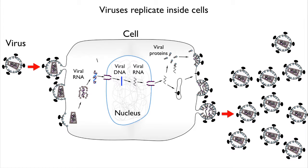The key feature is one virus coming into one cell can generate many, many viruses coming out. For example, in the virus that I study, HIV-1, a person gets infected by one single infectious virus. Two weeks later, their body is full of billions of viruses. So it's an amplification as well as a replication process.